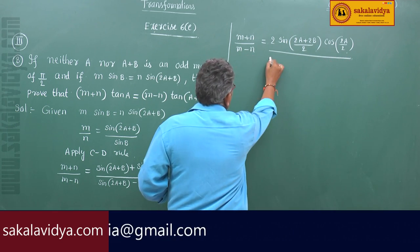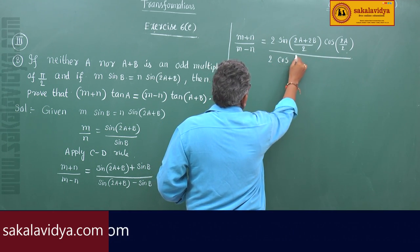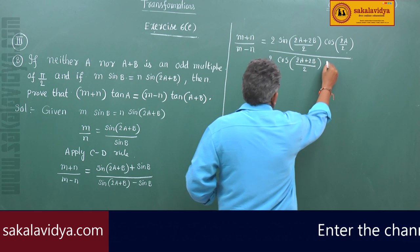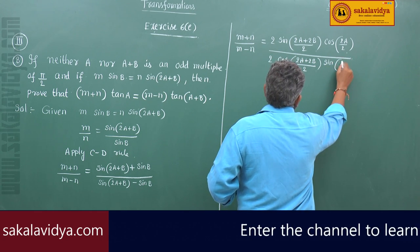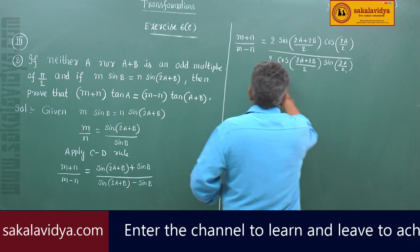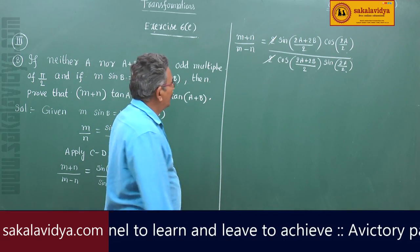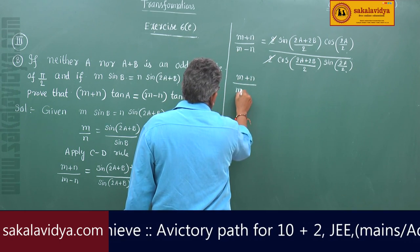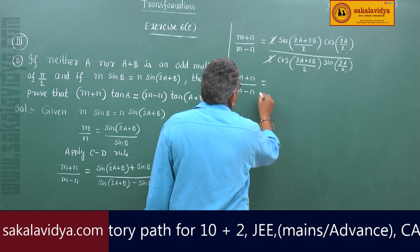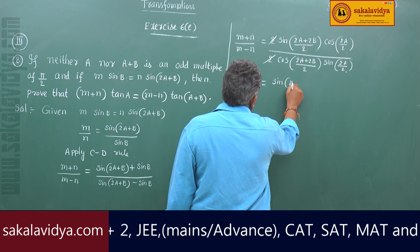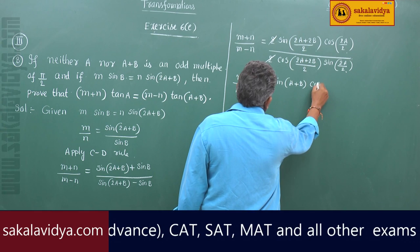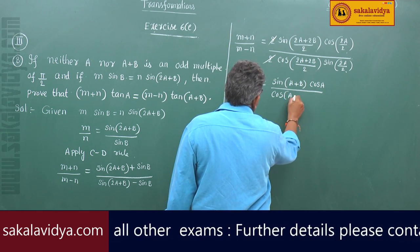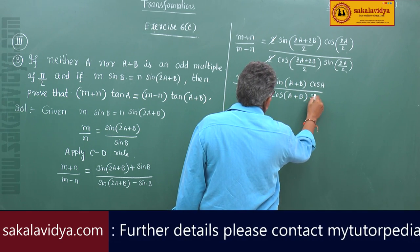The denominator becomes 2·cos((2A+2B)/2)·sin((2A)/2). The 2s cancel: (m+n) by (m-n) equals sin(A+B)·cos(A) divided by cos(A+B)·sin(A).